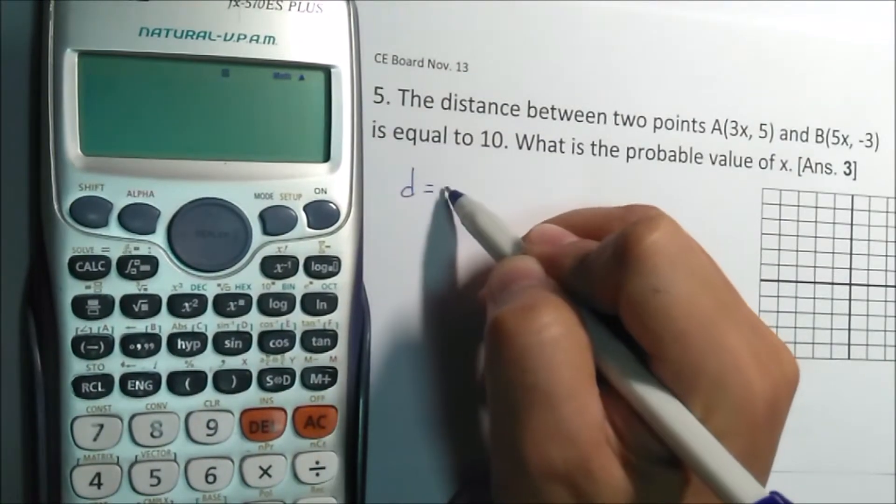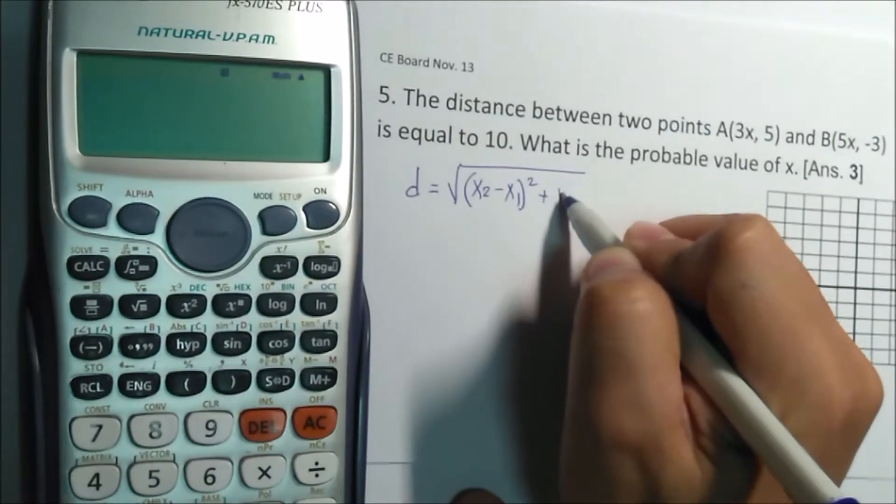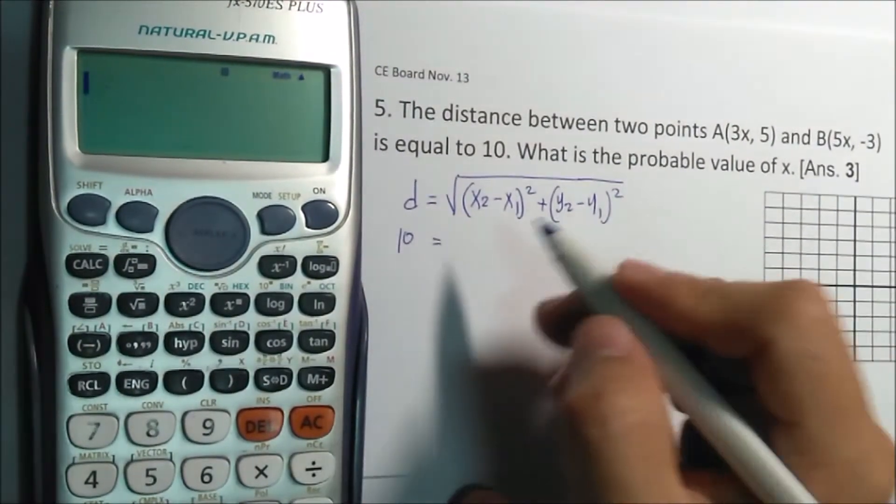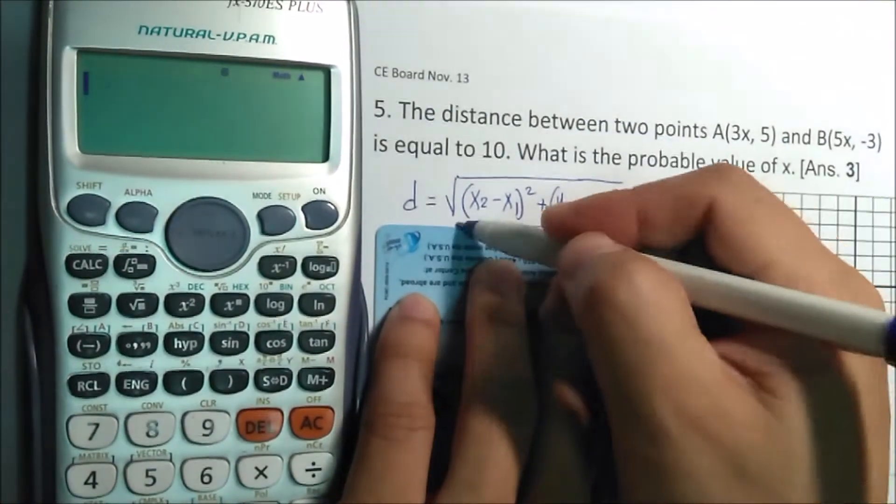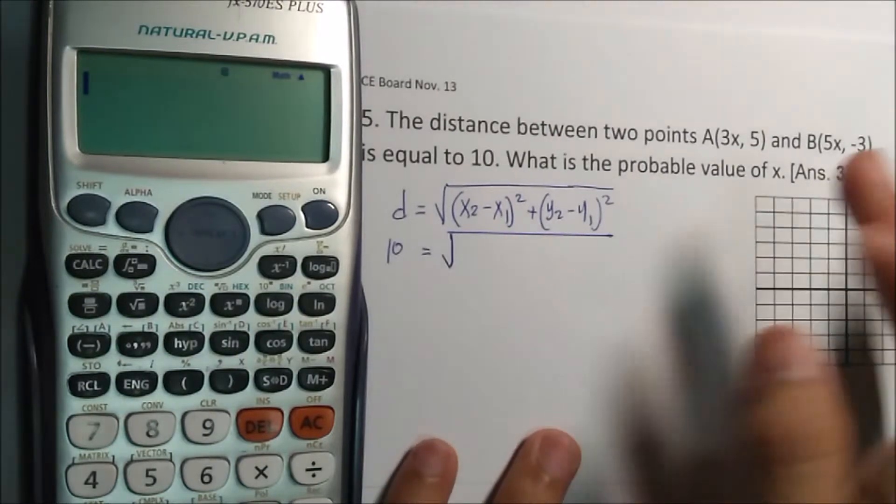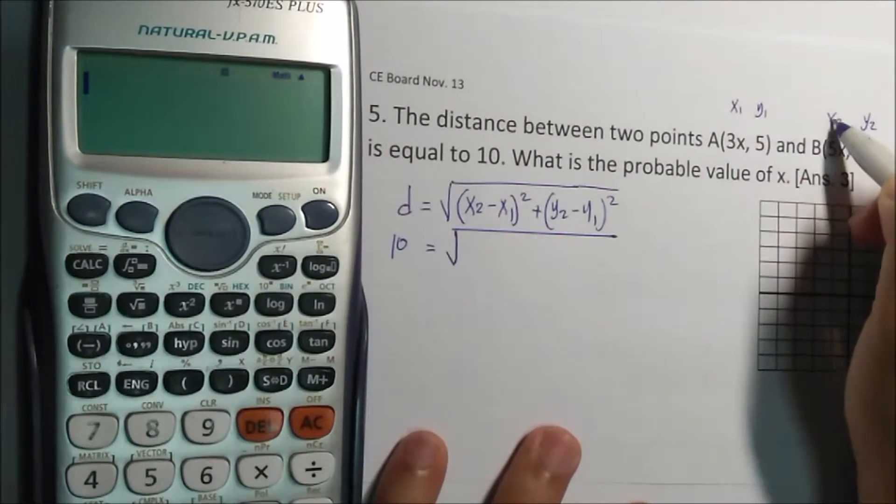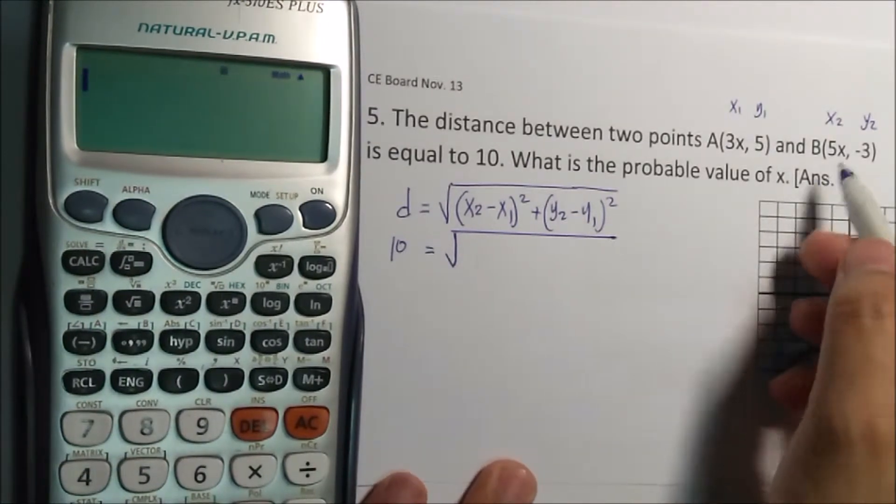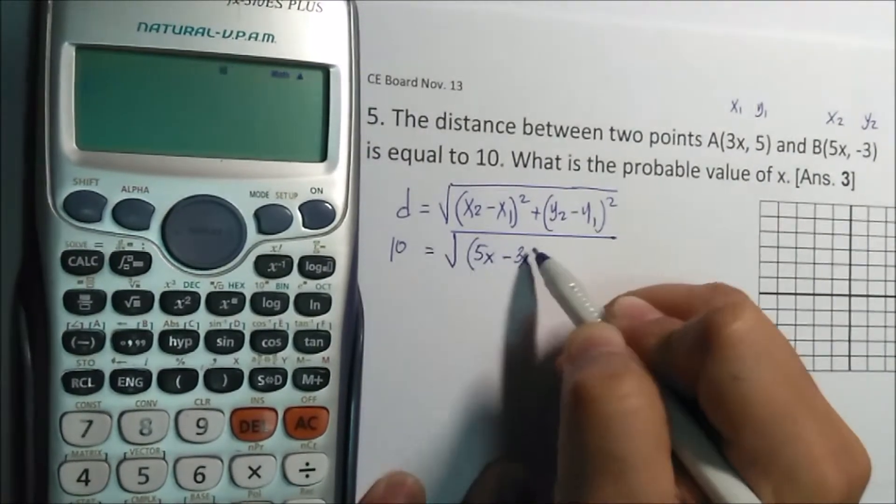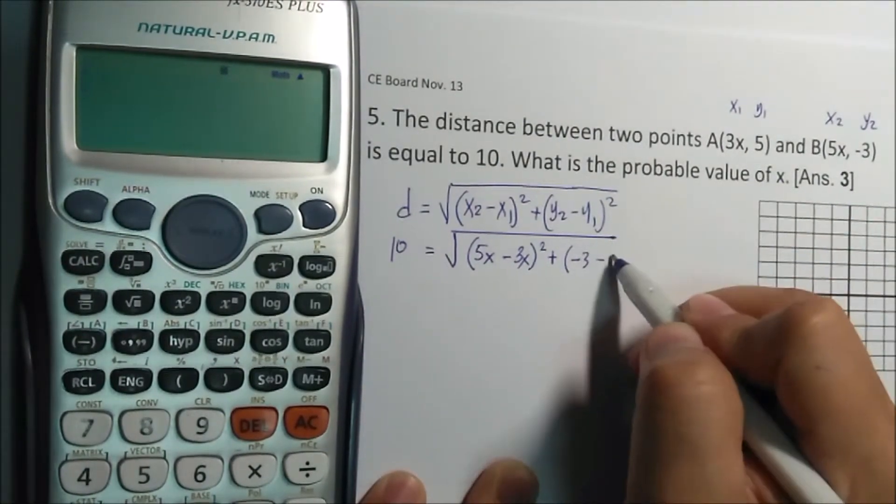So formula D is equal to the square root of x2 minus x1 squared plus y2 minus y1 squared. So D is 10. Square root of... which one is x2, which one is y2? No problem, either of the two. If this is x1, y1, this is x2, y2. So x2 is 5x minus 3x squared plus y2 minus 3 minus 5 squared.